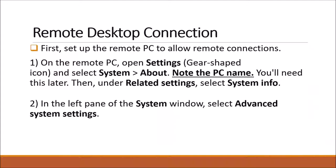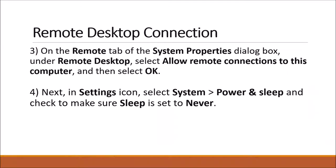To set up Remote Desktop Connection, first you want to set up your remote PC to allow remote connections. Go to Settings and select System. Remember the PC name because you'll need that later. On the related settings, select System Info. In the left pane of the System window, select Advanced System Settings. On the Remote tab, allow remote connections to this computer. Then go back to Settings, select System, go to Power & Sleep, and check to make sure sleep is not set — if the machine goes to sleep, you won't be able to connect to it.